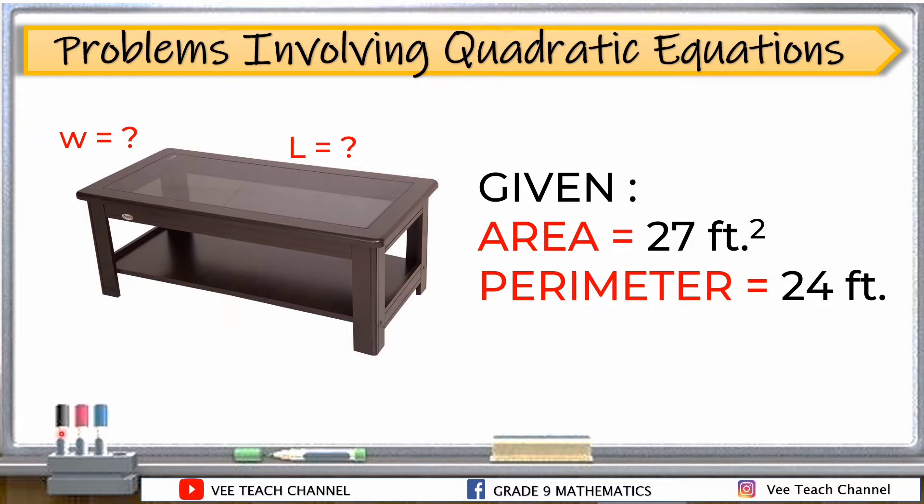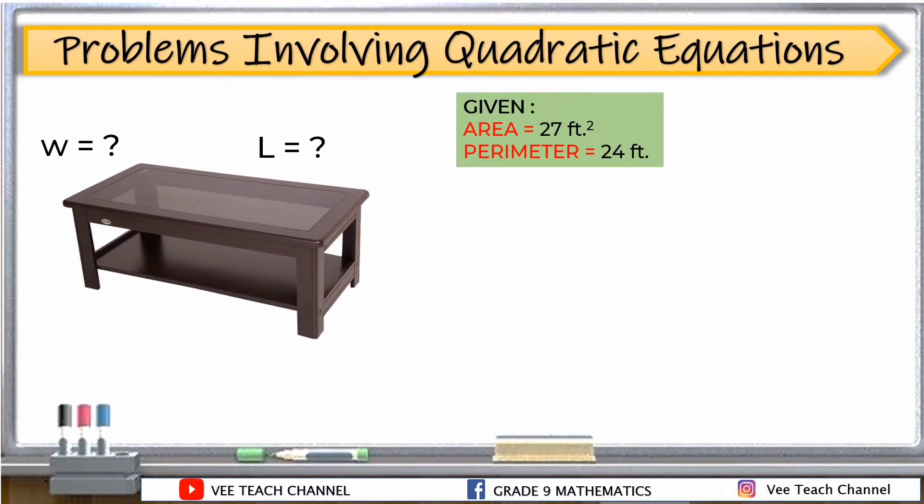According to the problem, yung area ng table ay 27 feet squared and tapos yung perimeter is 24 feet. Ayan lang yung given dun sa ating problem. Ang hinahanap natin is yung sukat ng length and then ng width. Paano natin masasolvihan kung ang given lang ay area and then yung ating perimeter?